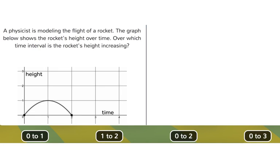All right, we are analyzing a graph here. It says a physicist is modeling the flight of a rocket. The graph below shows the rocket's height over time.